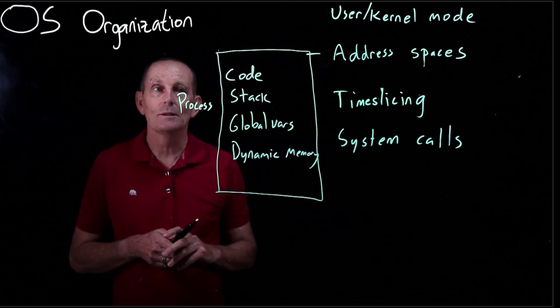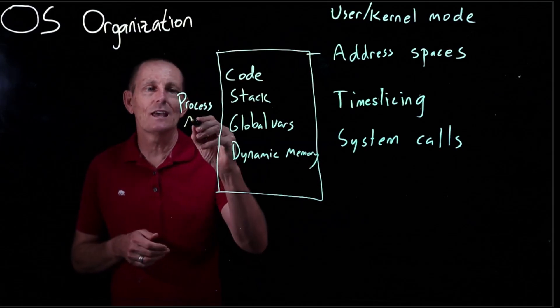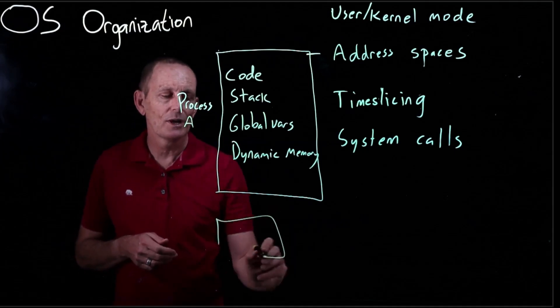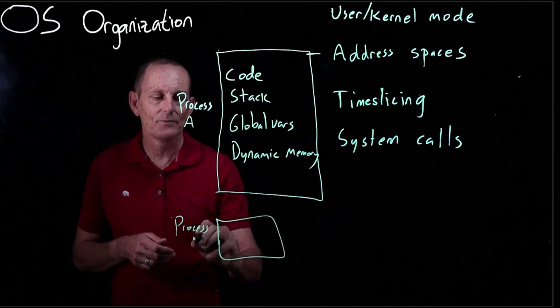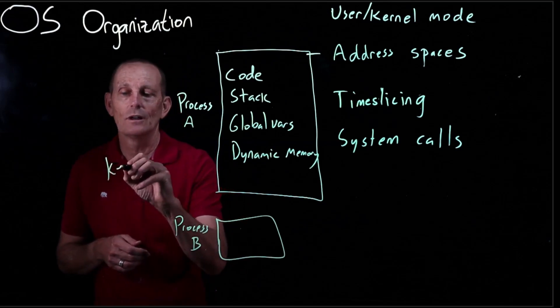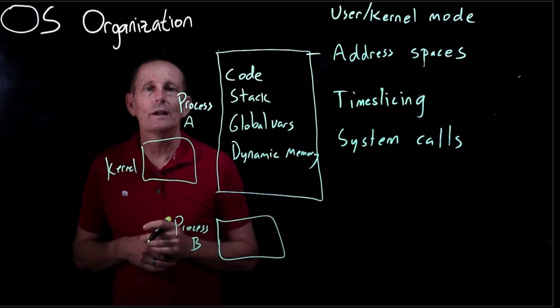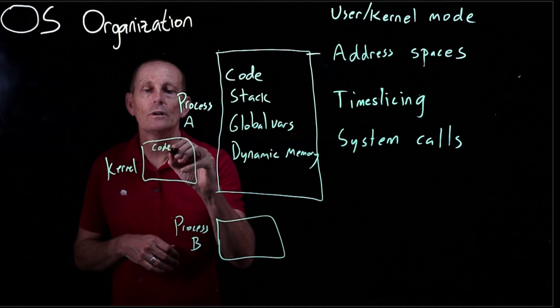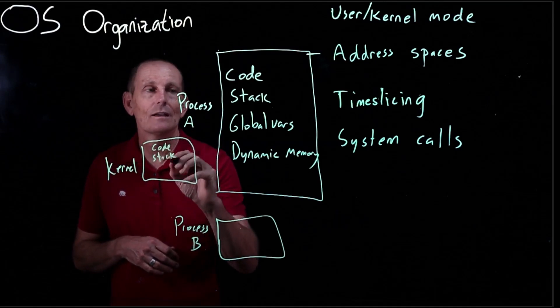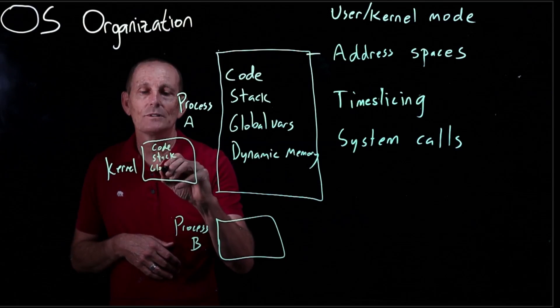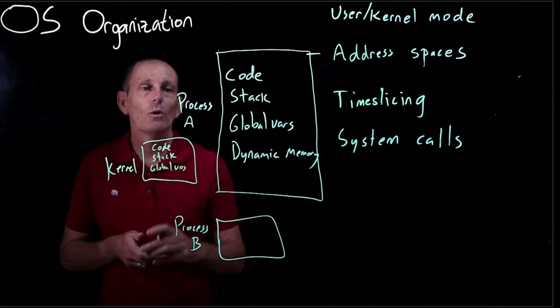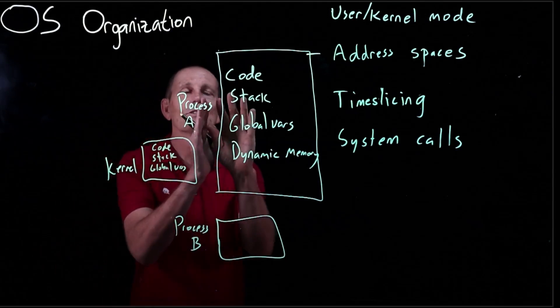So if in memory there's process A and then also process B with its requirements, and the kernel with its requirements, its own code, its own stack, its own global variables, and so on, what we want is when process A is running, it only has access here.